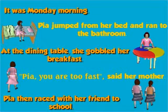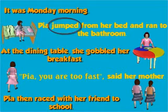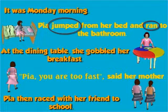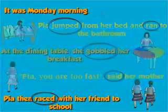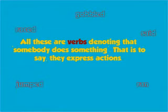Pia then raced with her friend to school. Note the words: jumped, ran, gobbled, said, and raced. All these are verbs denoting that somebody does something — that is to say, they express actions.